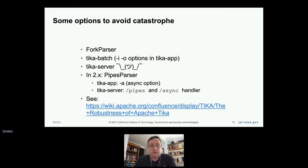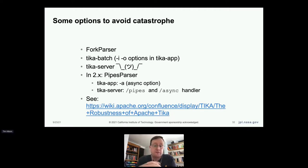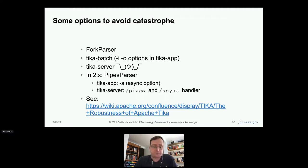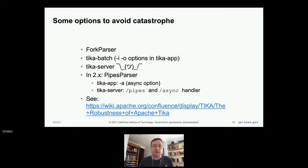Some options to avoid catastrophe: we've had the fork parser for a long time — it forks a spawned process that does the parsing. Tika batch, for running file share to file share, you can just call Tika app with -I for input directory and -O for output directory and it'll run robustly, forking a child process for parsing. Tika server, which I'll talk about in detail. And the pipes parser, which expands on the fork parser notion and adds connectivity to S3, Solr, Elasticsearch, and more.